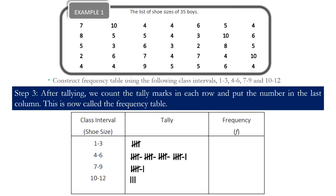What we have to do is find the total of the tally marks. For the class interval 1 to 3, that has a total of 5, so we write 5. For class interval 4 to 6, the total is 21, so we write 21. Class interval 7 to 9 has 6 tally marks, so we put 6. And for 10 to 12, it has a frequency of 3. So that is our frequency table.